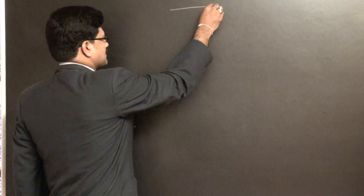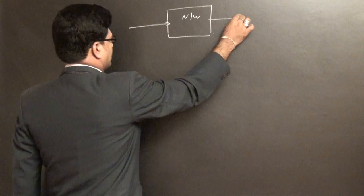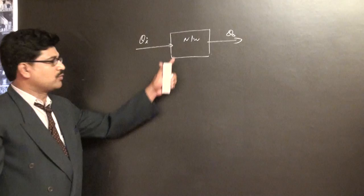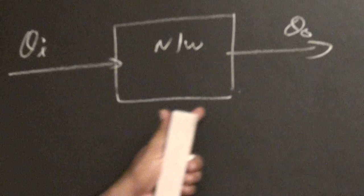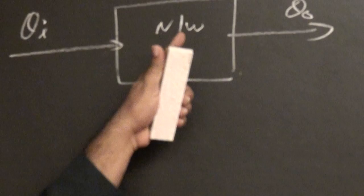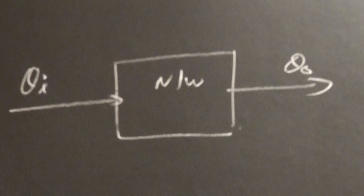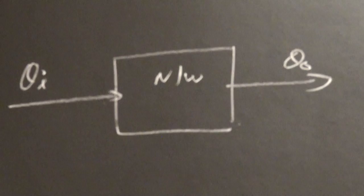Network analysis is the observation of the response at any point in a network by giving known excitation to a known network. Simply, we have to observe the responses by giving known excitation to the known network — that is called network analysis.